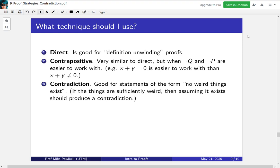So whenever you see a statement of the form 'no weird things exist,' proof by contradiction might be what you want.